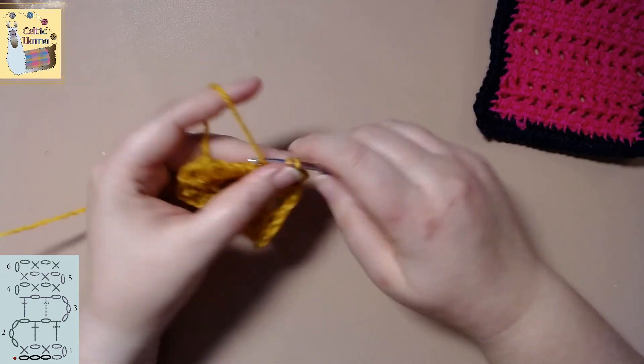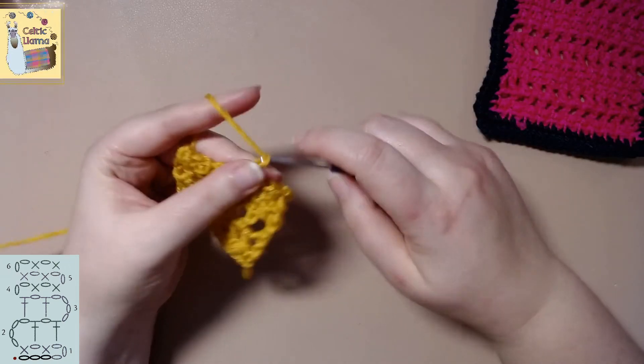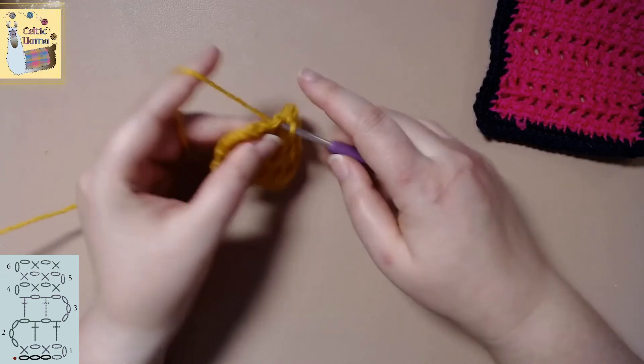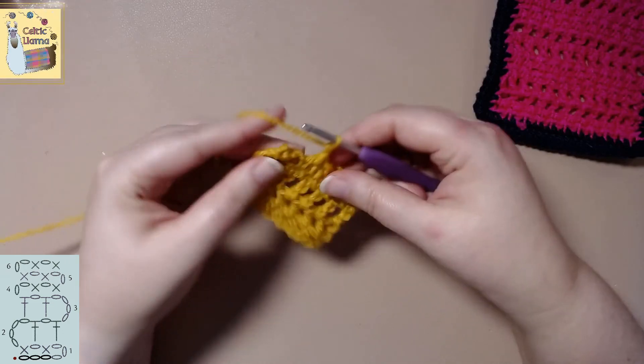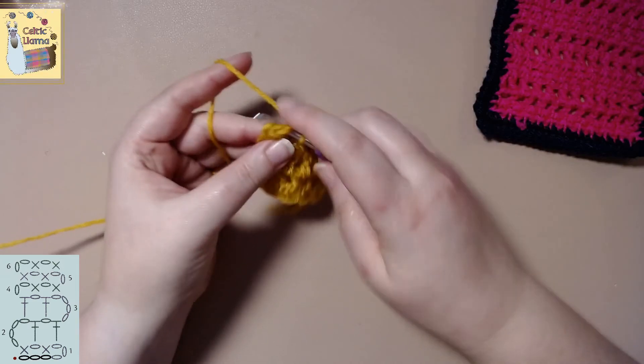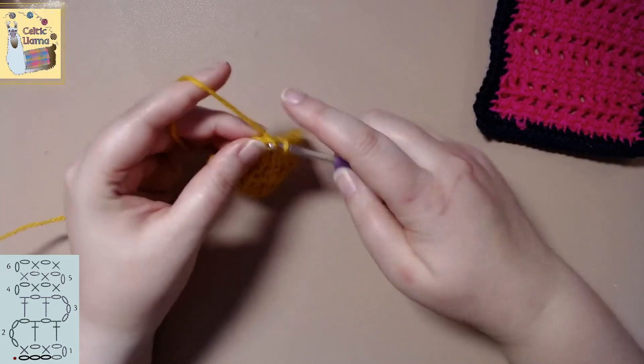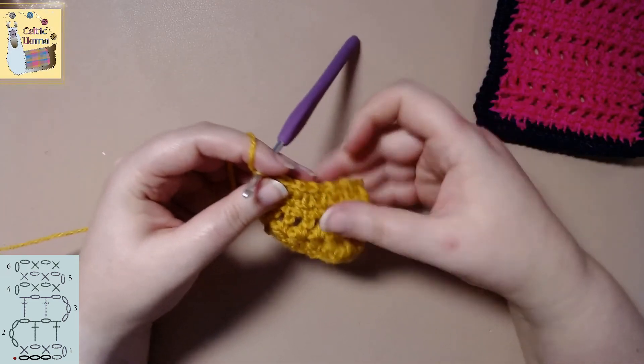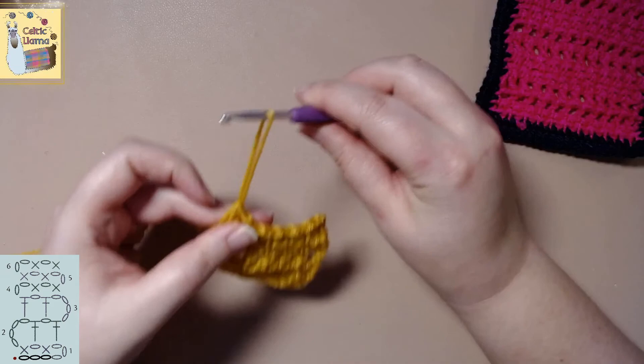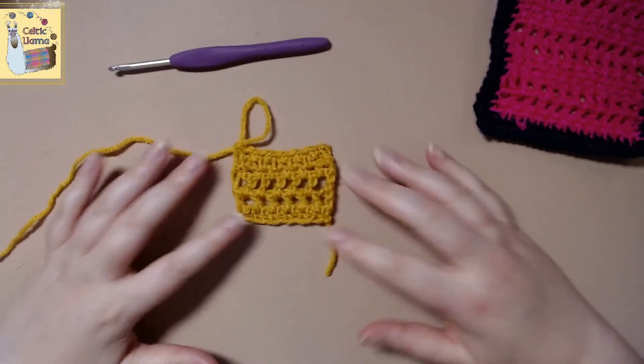So here we are on row six and we're doing exactly the same thing as the last two rows of chain one and single crochet in the chain one space. So the repeat for this is it's two rows of double crochets followed by three rows of single crochets. And that would be your repeating pattern. So you would repeat rows two through six.